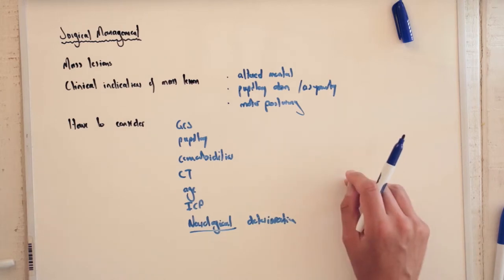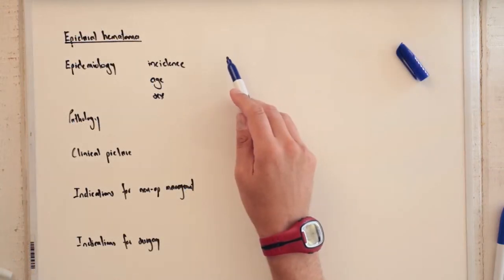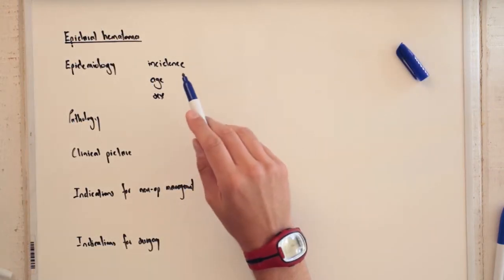In the next video we will start looking at the various lesions. The first mass lesion we will discuss is the epidural hematoma, that is between the cranium and the dura.